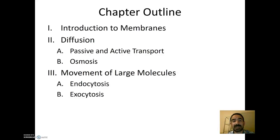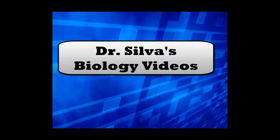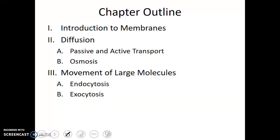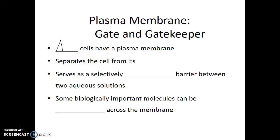Now that we've learned a bit about solutions and diffusion, let's talk about the plasma membrane, the boundary of the cell, the border between life and not life. All cells have a plasma membrane. This is something that's shared both with prokaryotic cells and eukaryotic cells. What this plasma membrane does is that it separates the cell from its environment.